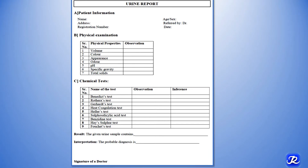In the urine report format, mention all patient information, physical properties, observations, and in the chemical test section perform all tests with observations and inferences. In this particular case, the heat coagulation test, Haller's test, and sulfosalicylic acid test may be positive, indicating presence of protein in the urine. The benzidine test can also be positive, indicating presence of blood in the urine.